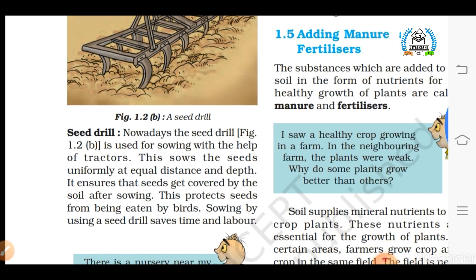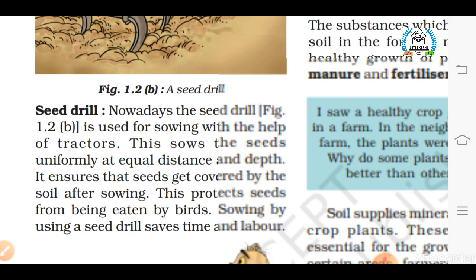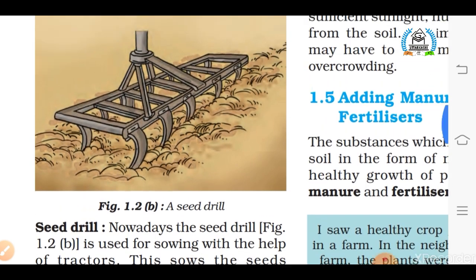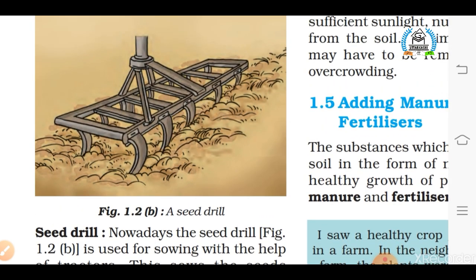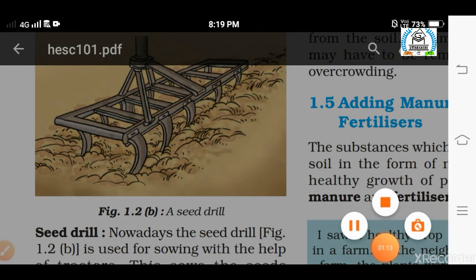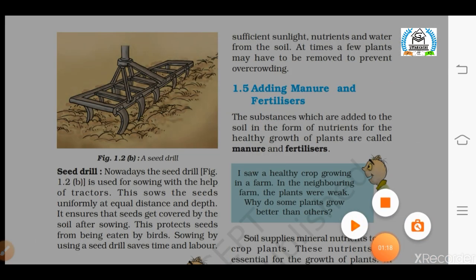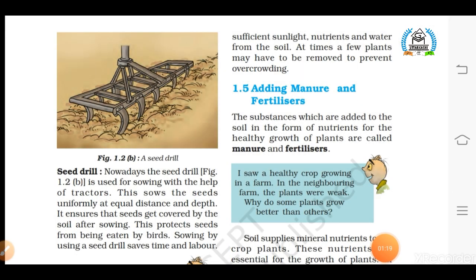The second and most important way of sowing seeds is using a seed drill. This is the modern technique of sowing seeds with the help of tractors. This is the best method because it sows seeds uniformly at proper distances and depth. The second advantage over the traditional tool is that it saves time as well as labor, which is why this technique is most prevalent in developed countries.